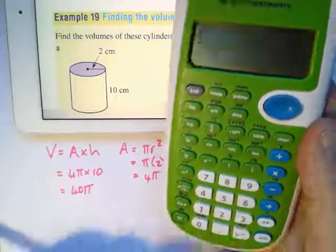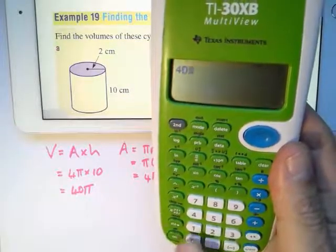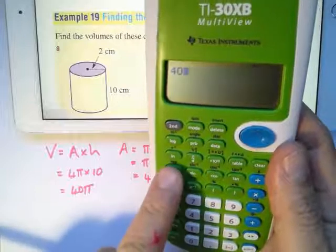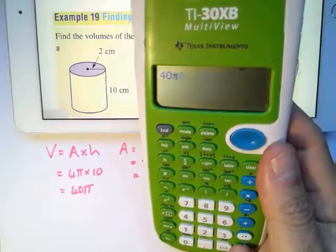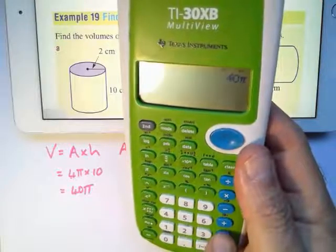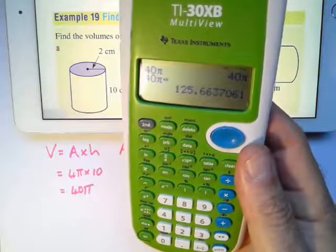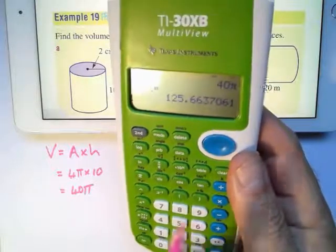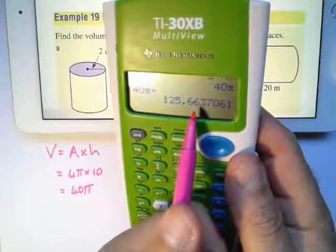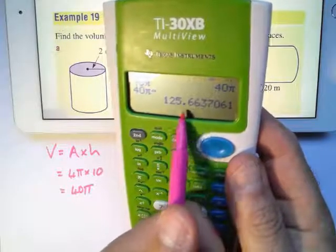If I do that on my calculator, 40π, there's my button, enter. I'm going to use this to convert it. It's going to be 125.66. I'll round to two decimal places, so I look at the third decimal place. It's smaller than 5, so it's 125.66.